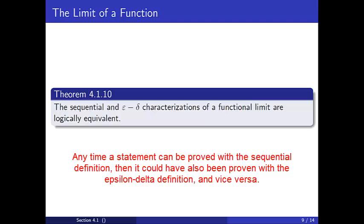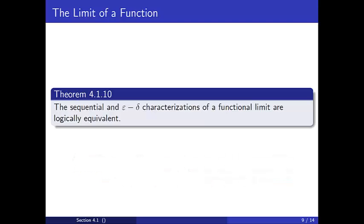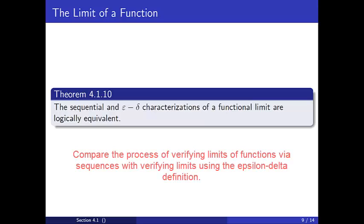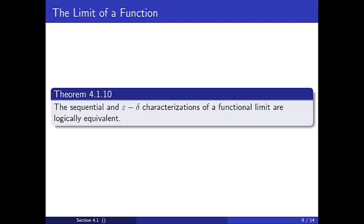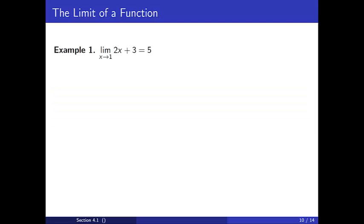For the remainder of this video, we will consider a few examples. For our examples, we will work with the same limits computed in our last video so that you can compare the process of verifying limits of functions via sequences with verifying limits using the epsilon-delta definition. In the first example, we will show that the limit of the function f of x equals 2x plus 3 as x approaches 1 is equal to 5.